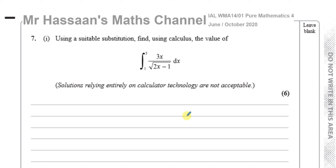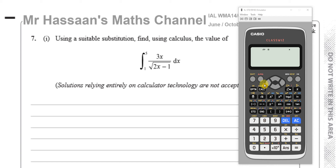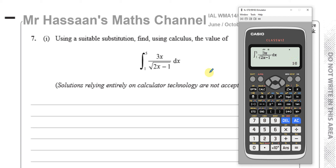The reason they write this is because your calculator is able to calculate this directly — most calculators can do that. So if I type in the definite integral of 3x over the square root of 2x minus 1, with limits 1 on the bottom and 5 on the top, and press equals, it gives me the answer. But this is not acceptable — if you just write down the answer, you will get absolutely zero marks.